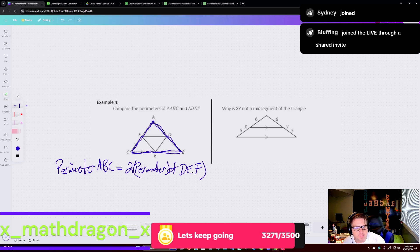And why is XY not a midsegment of the triangle? Because these two need to be equal to whatever that midsegment is. This midsegment should be, all three of these values should be the same. If they're not, it's not a midsegment, it's something else. All right. Well, that takes care of midsegment.